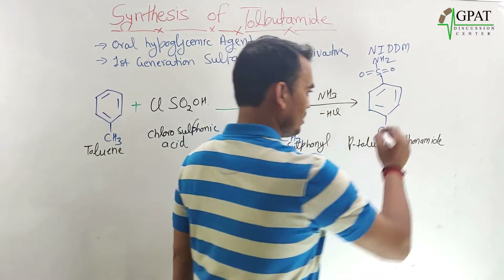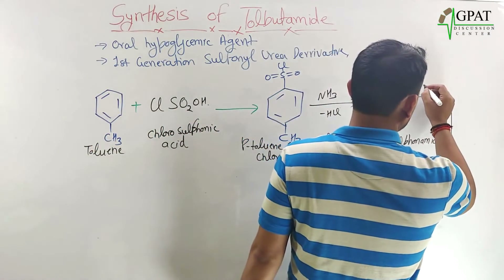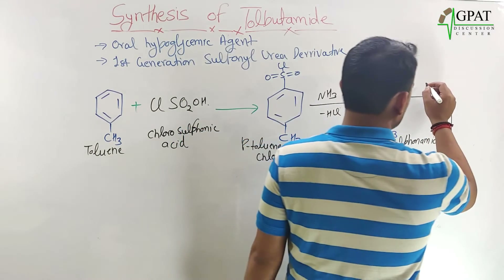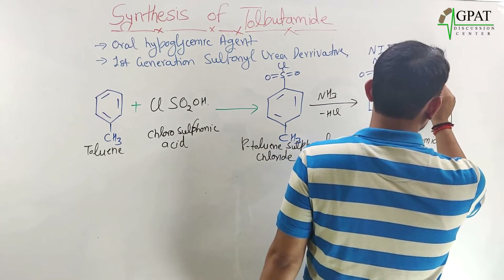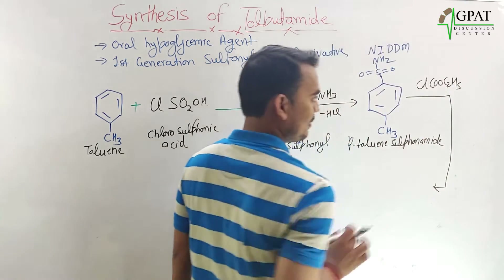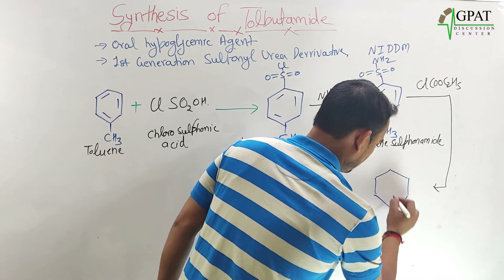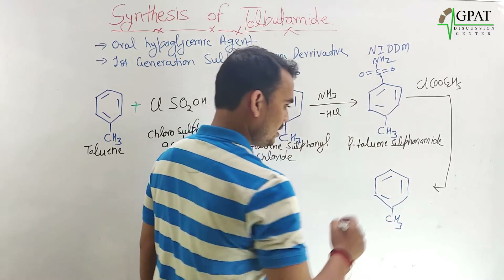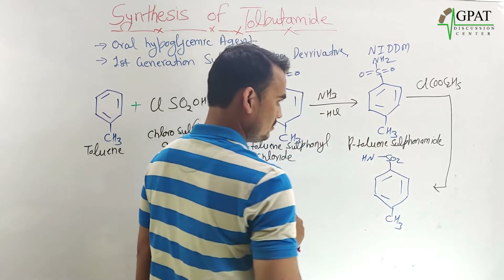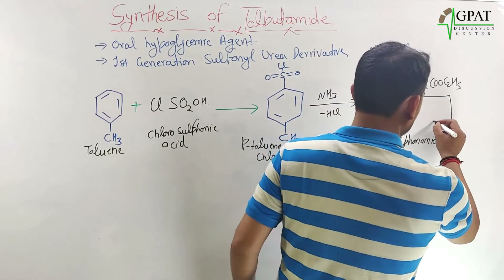Paratoluene sulfonamide undergoes a condensation reaction with ethyl chloroformate in the presence of pyridine. The chlorine from ethyl chloroformate and one hydrogen from the amino group are removed as HCl.